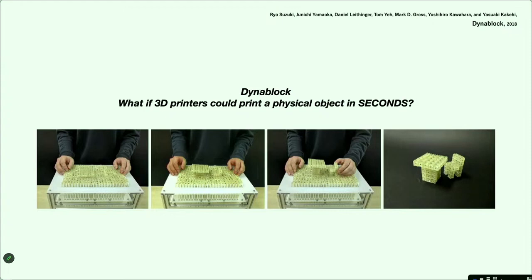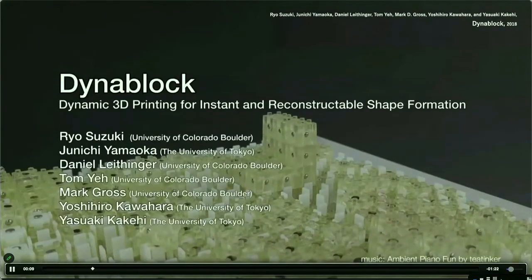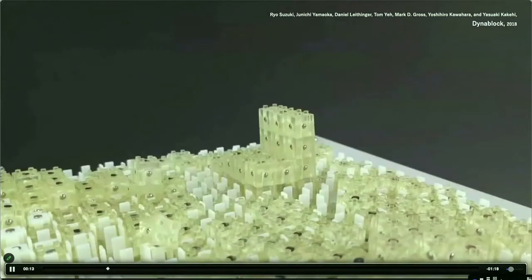Many in today's audience may already be familiar with digital fabrication including 3D printers. 3D printers are useful tools for rapid prototyping, but they still take on the order of hours to create a three-dimensional object. But if we consider fabrication machines as computer output interfaces in the same way as monitors or speakers, we'd also like to aim for a future in which shapes are output in as much real-time and interactively as possible. This project, which we call DynaBlock, is a prototype that aims to create a three-dimensional object in a few seconds.